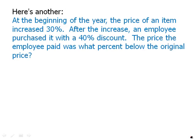Here's another problem. At the beginning of the year, the price of an item increased 30%. After the increase, an employee purchased it with a 40% discount. The price the employee paid was what percent below the original price — that is, what percent below the price before the increase? Pause the video and take a moment to work this out on your own.